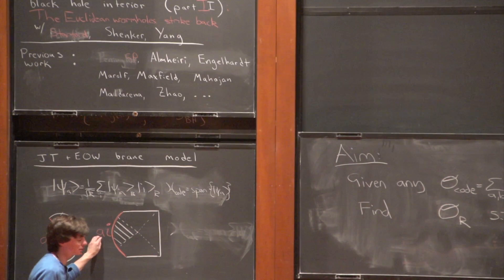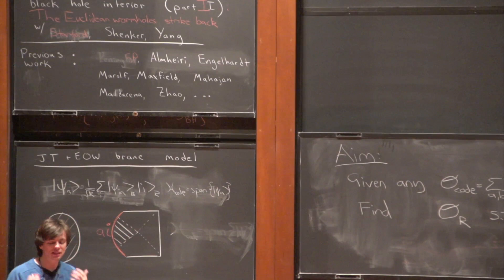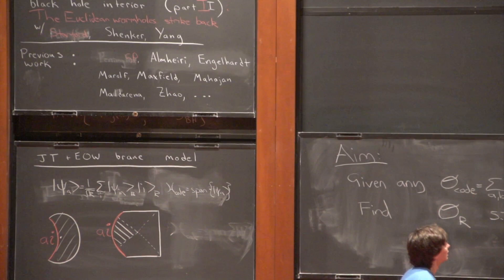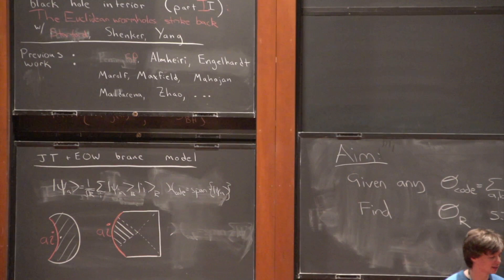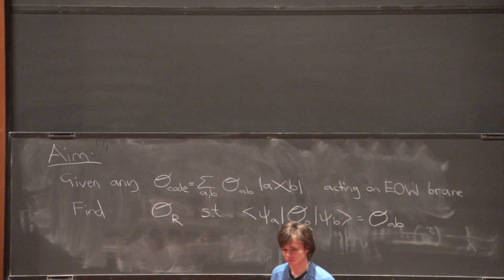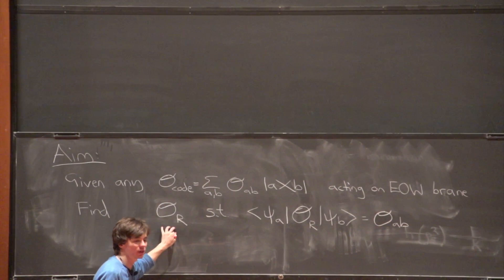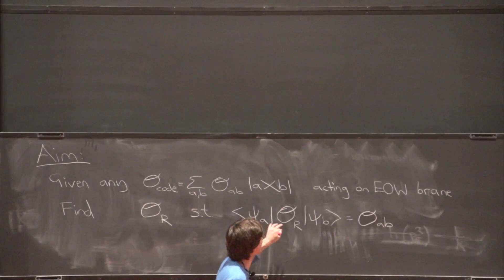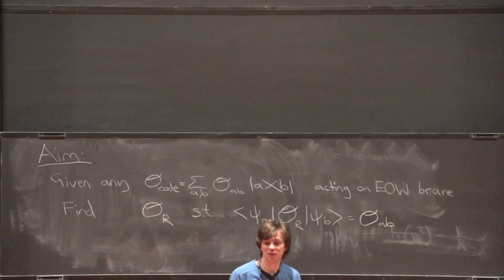We want to show that these extra degrees of freedom sitting in the interior of the black hole — in this island — are secretly encoded in the Hawking radiation. More explicitly: given any operator acting on the extra degrees of freedom A (i.e., a bulk operator acting on the end-of-the-world brane), we want to show there always exists some other operator O_R that acts only on the Hawking radiation system R and does the same thing — its matrix elements ⟨Ψ_a|O_R|Ψ_b⟩ are exactly the same as the bulk matrix elements for the corresponding states.